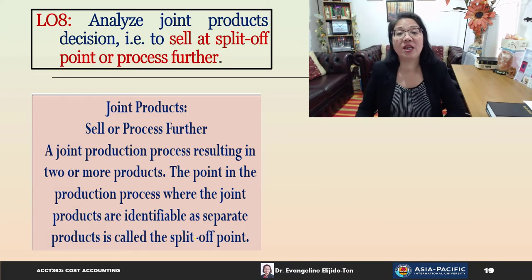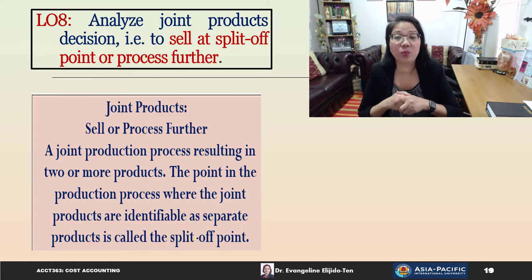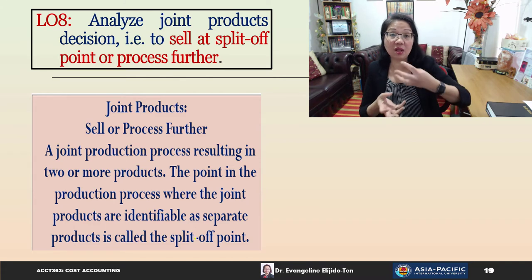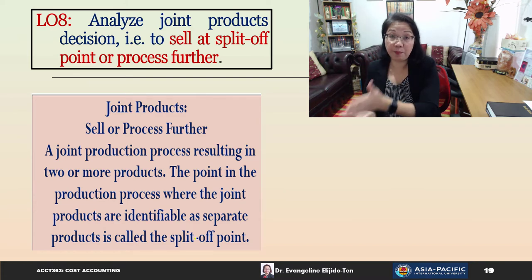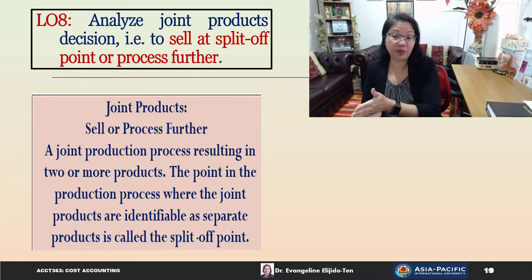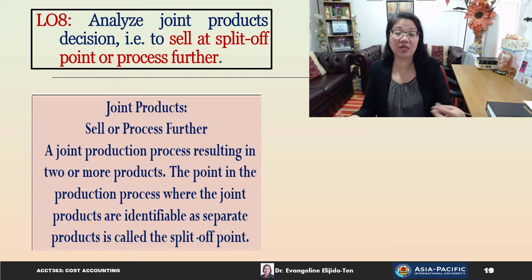Let's move on to Learning Objective 8, where we will analyze joint product decisions — that is, whether to sell at split-off point or to process further. Joint production is the production process resulting in two or more products being produced simultaneously up to a certain point, called the split-off point. This is the point in the production process where joint products become identifiable as separate products.